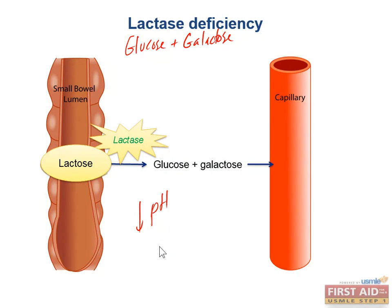You can diagnose lactase deficiency clinically, but stool testing will demonstrate a decreased pH and breath tests will show an increased hydrogen content. The treatment is to avoid lactose in the diet, or you can take pills that contain the lactase enzyme along with food so that you have lactase in your system and can tolerate some lactose.